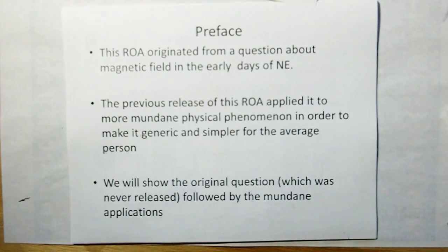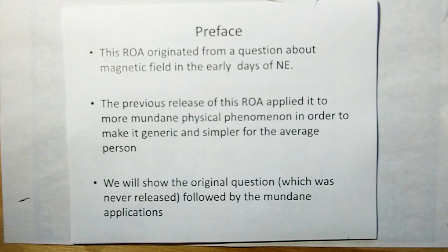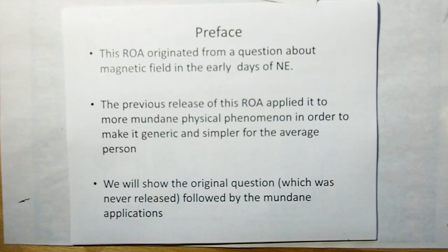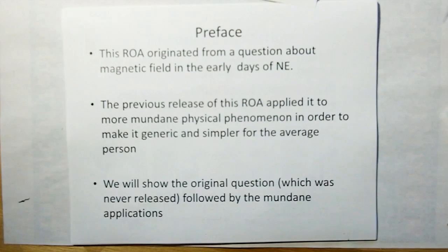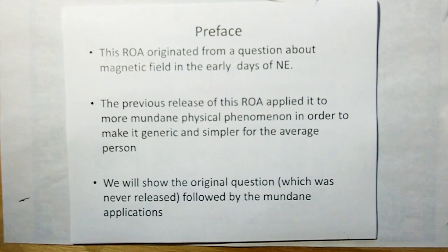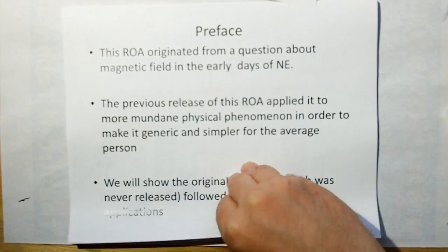This rule of acquisition originated from a question about magnetic fields early on in the days of new electromagnetism. The previous release of this rule only applied it to mundane physical phenomena in order to make it generic and simpler for the average person. But I'm reissuing this now in the context of how it really helped push new electromagnetism along. We're going to start with the original question, which I never released because I didn't really think it was that important. But this actual rule of acquisition came from this next question I'm about to show you.